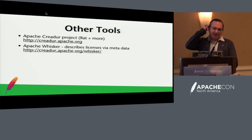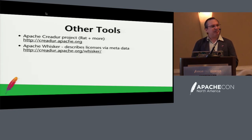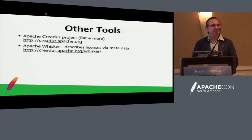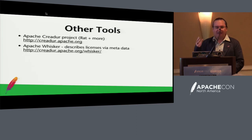Apache RAT is a useful tool, but there's also Apache Whisker, which I haven't looked into in depth, but it looks like a really interesting idea in that it describes licenses via metadata and could sort of automate the whole licensing thing. It does seem like a lot of work, and there are almost always exceptions, but I like the concept.